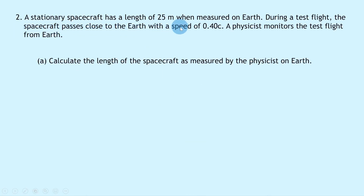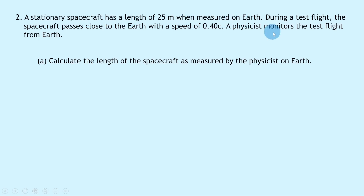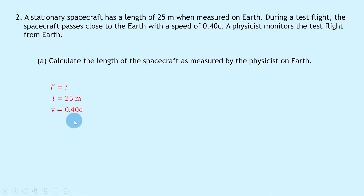Question 2 says a stationary spacecraft has a length of 25 meters when measured on Earth. During a test flight, the spacecraft passes close to the Earth with a speed of 0.4c. A physicist monitors the test flight from Earth. Part A says to calculate the length of the spacecraft as measured by the physicist on Earth. The stationary length of 25 meters is the proper length l, but the physicist observes the spacecraft when it's moving, so we want the relativistic or contracted length l'.